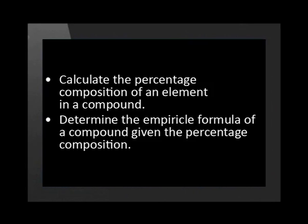The second way is to show the ratio of the elements in a compound as a whole number ratio in its simplest form. This ratio is called the empirical formula of the compound. You should be able to calculate the percentage composition of an element in a compound and determine the empirical formula of a compound given the percentage composition. Determining these values is not just a theoretical question asked in school exams.